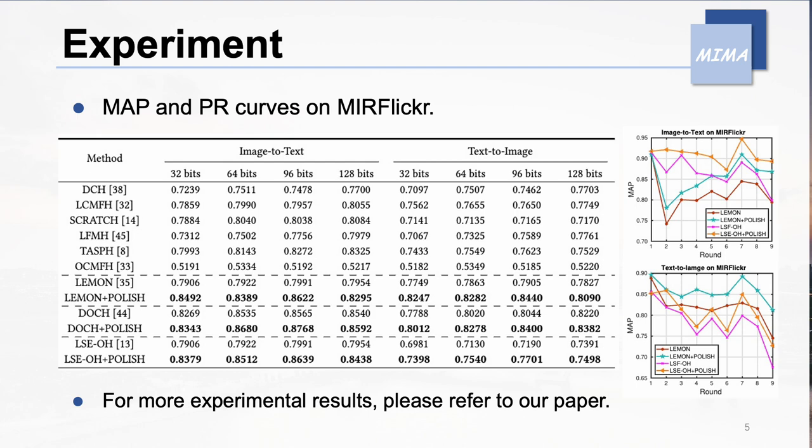From the above results, we can conclude that POLISH performs exceptionally well. It benefits not only from utilizing language models to learn label relevance and semantic information, but also from using obtained label representations as global information to guide the learning of hash codes. For more experimental results, please refer to our paper.